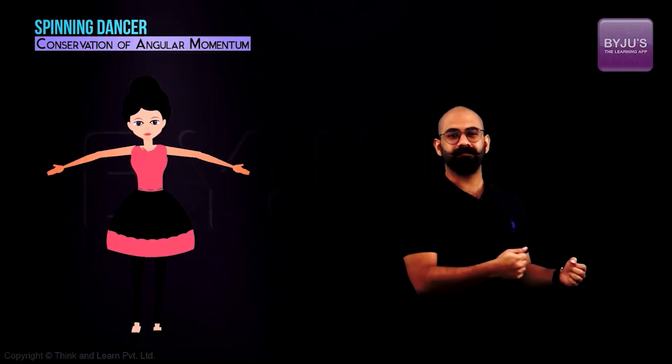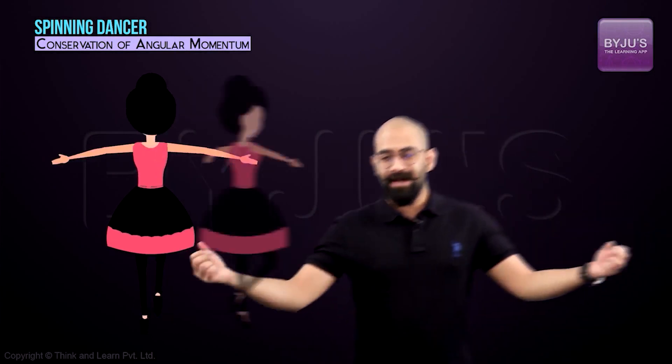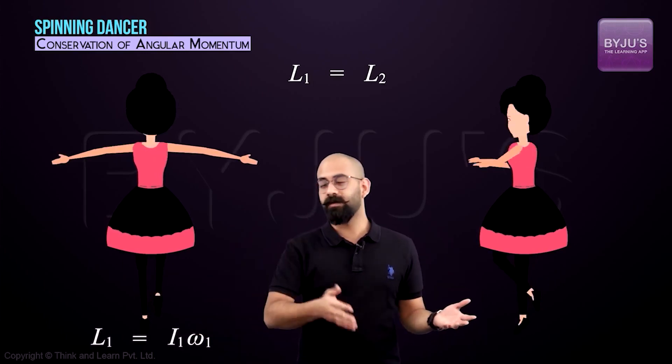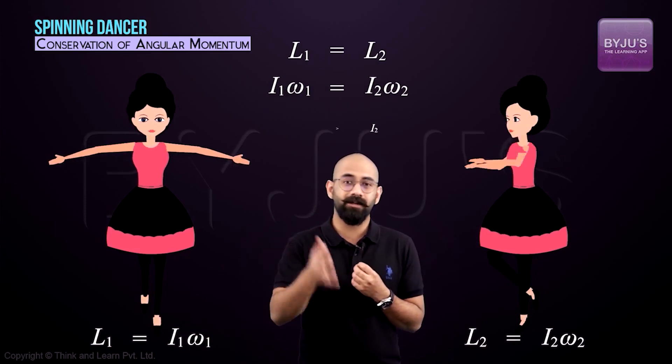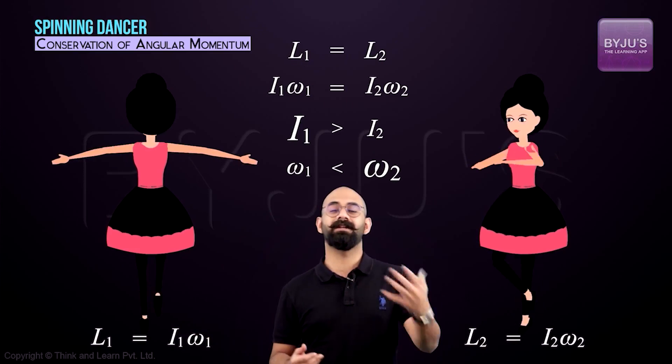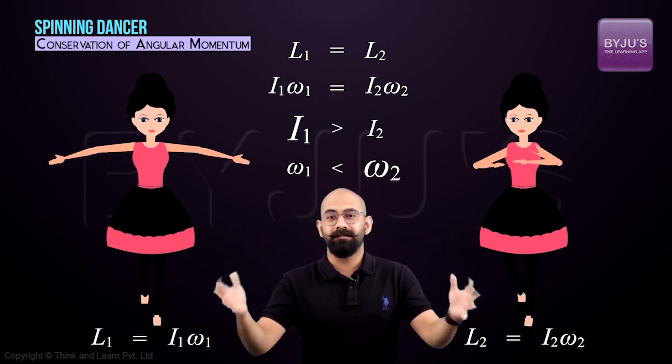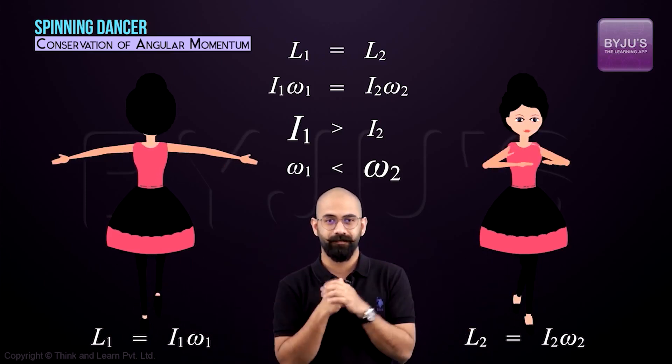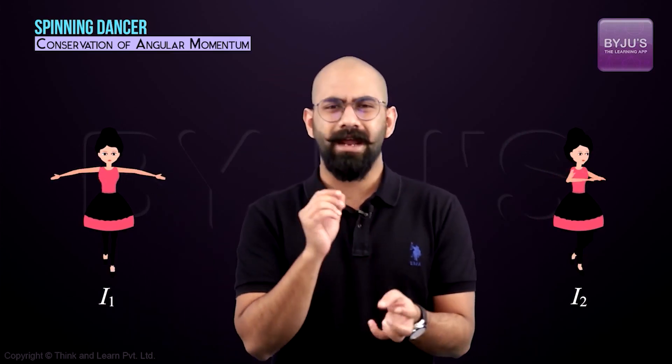Finally, let's address the spinning dancer. The dancer has some initial angular momentum. When she brings her hands close, she reduces her moment of inertia because more mass moves closer to the axis of rotation. There is no net external torque acting on her, so we conserve angular momentum: I1·omega1 equals I2·omega2. Since I2 is less than I1, omega2 must be greater than omega1 — which is exactly why her rotation speed increases.